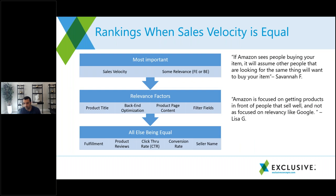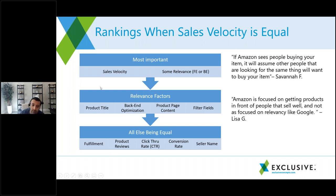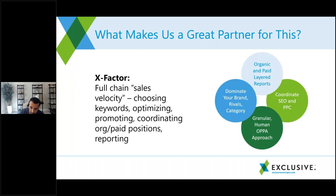When sales velocity is equal — say you and 50 other products all made one sale in the last two weeks — you need other differentiators. Relevance matters: use the keyword in the front end or back end of your listing. Having it in the title gives a slight boost among those tied products. Put the keyword in the back-end keyword section, bring it into the content, add more filter fields so Amazon confidently filters you in faceted search, and consider fulfillment and click-through rate.